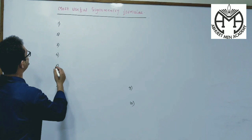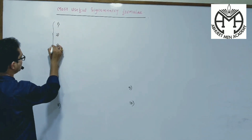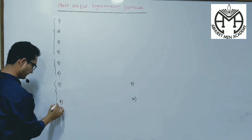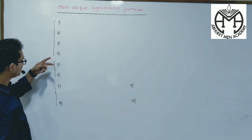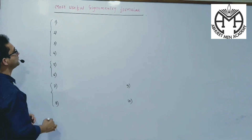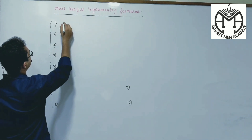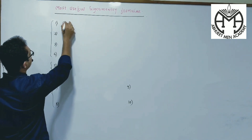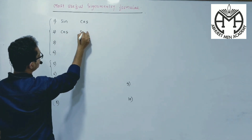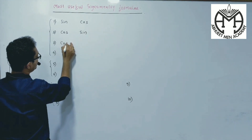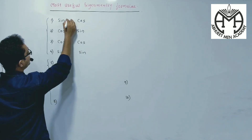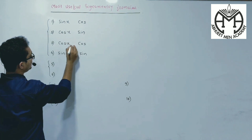First, making a group — this first group, next this group, and next this group. Just remember the sequence: Sin-Cos, Cos-Sin, Cos-Cos, and Sin-Cos. Here it will be X, X, X, X.